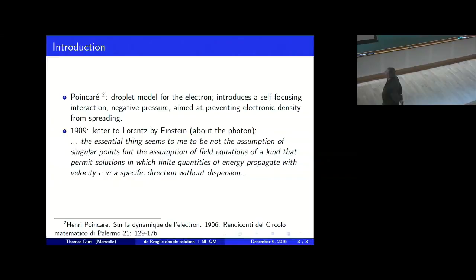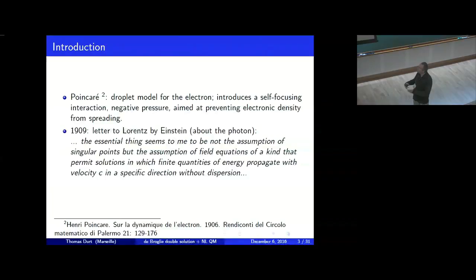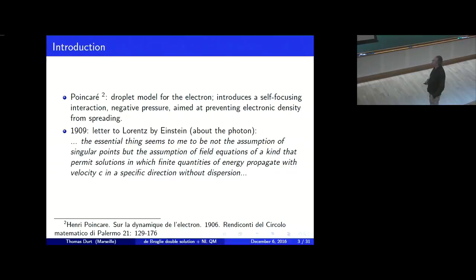Poincaré, in 1906, was working on a model for the electron where the electron was not a point but had some structure — it was a density of charge. Already at that time, he faced the problem that the electron had a tendency to spread. In order to preserve the corpuscular nature of the electron, he introduced a pressure, a negative pressure, a so-called Poincaré pressure, that prevents the spreading of the electron.